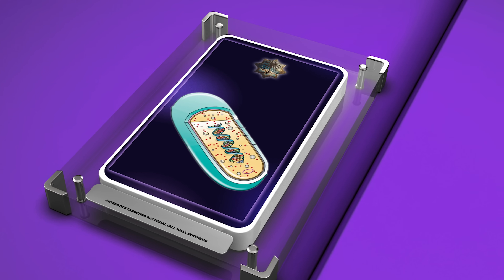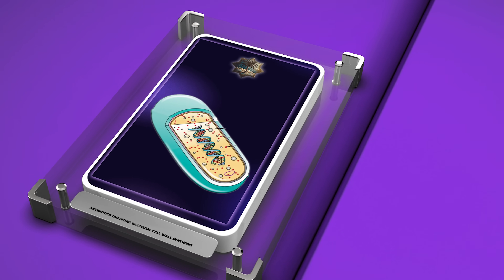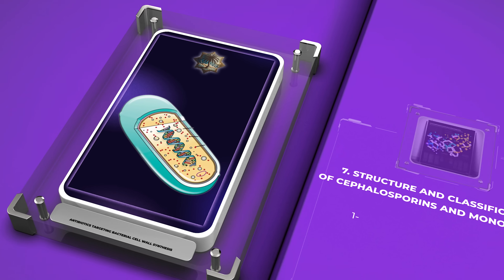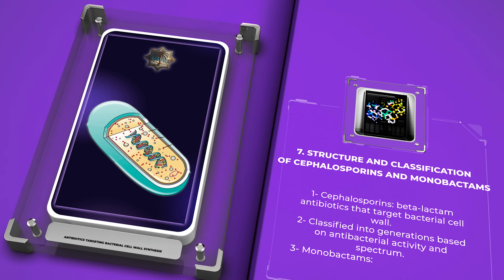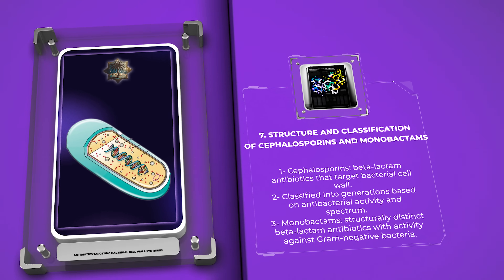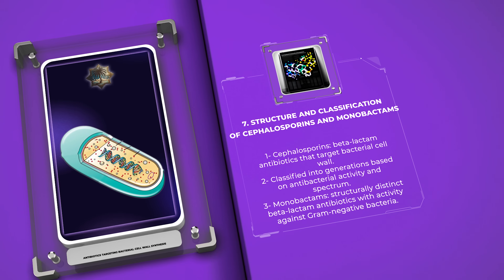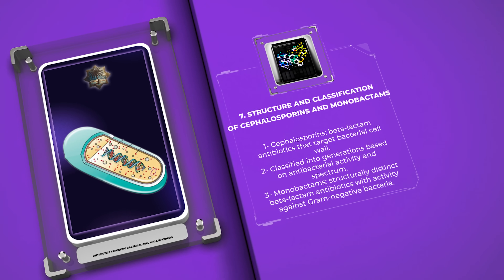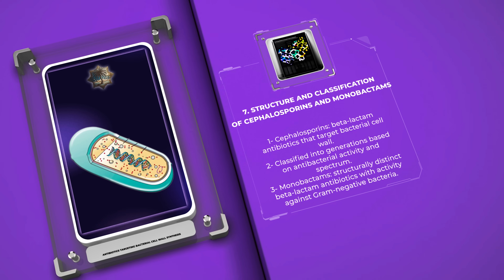Cephalosporins are another class of beta-lactam antibiotics that target the bacterial cell wall. Similar to penicillins, cephalosporins possess a beta-lactam ring but have a different side chain attached to it. They are classified into generations based on their antibacterial activity and spectrum.